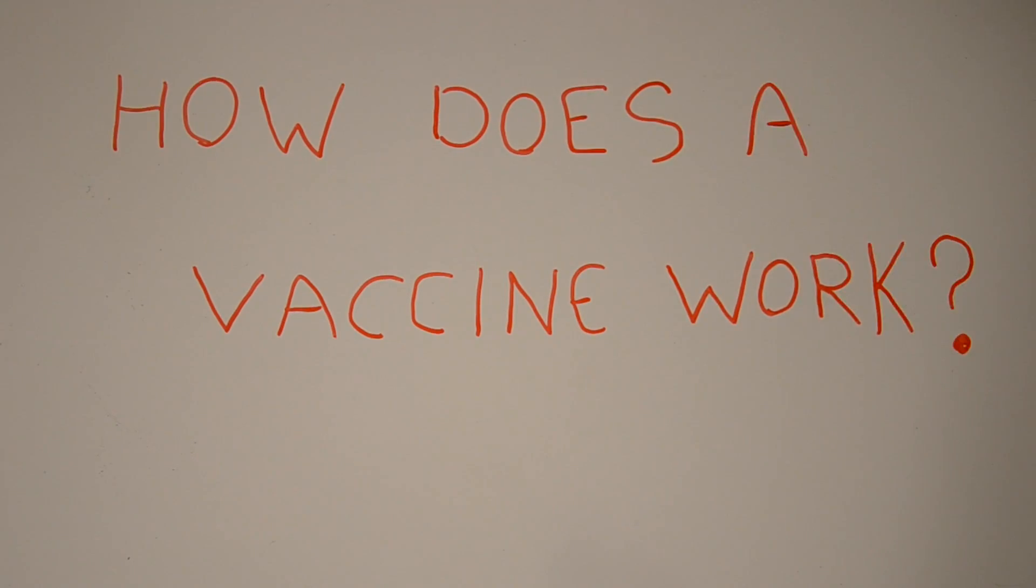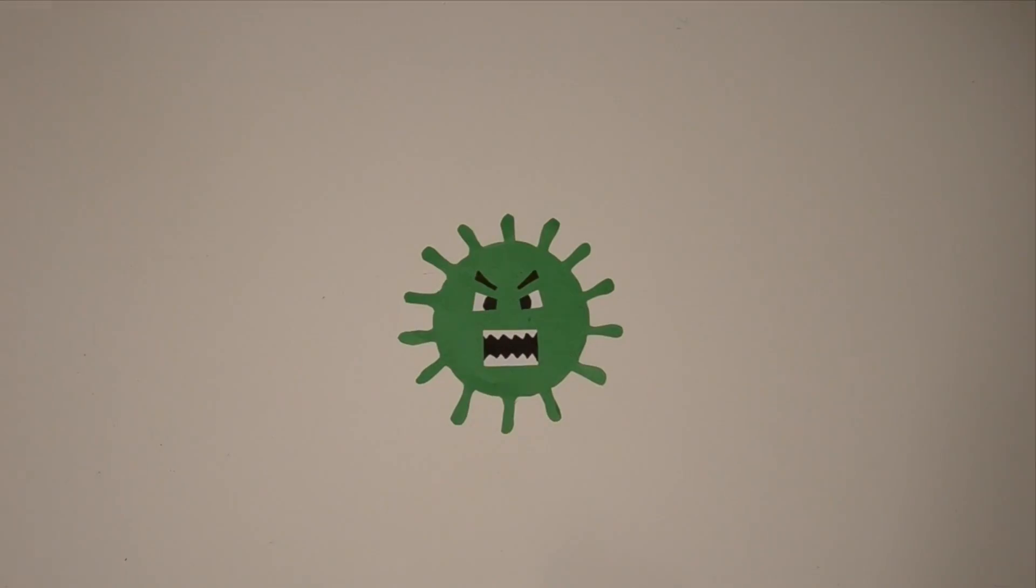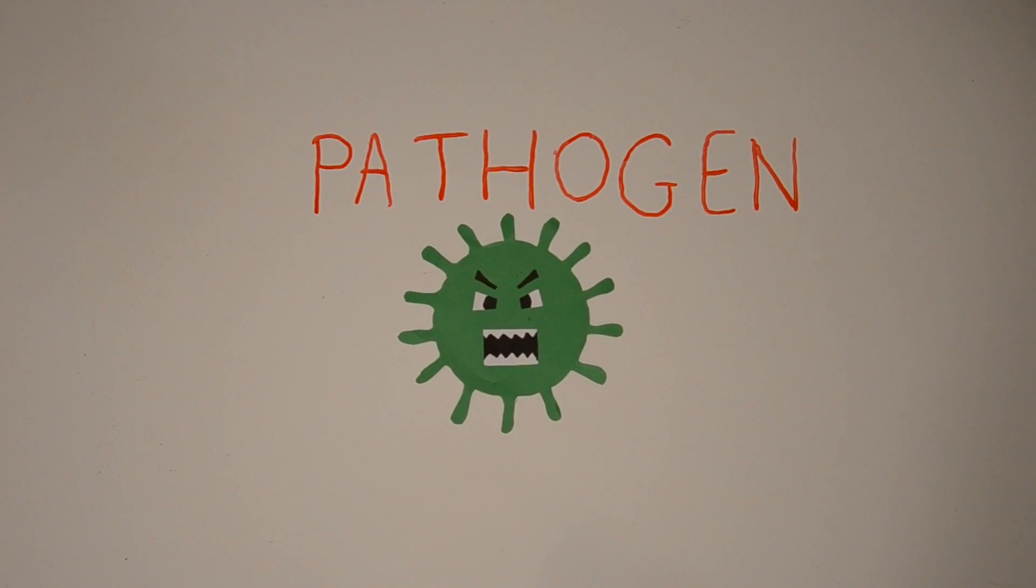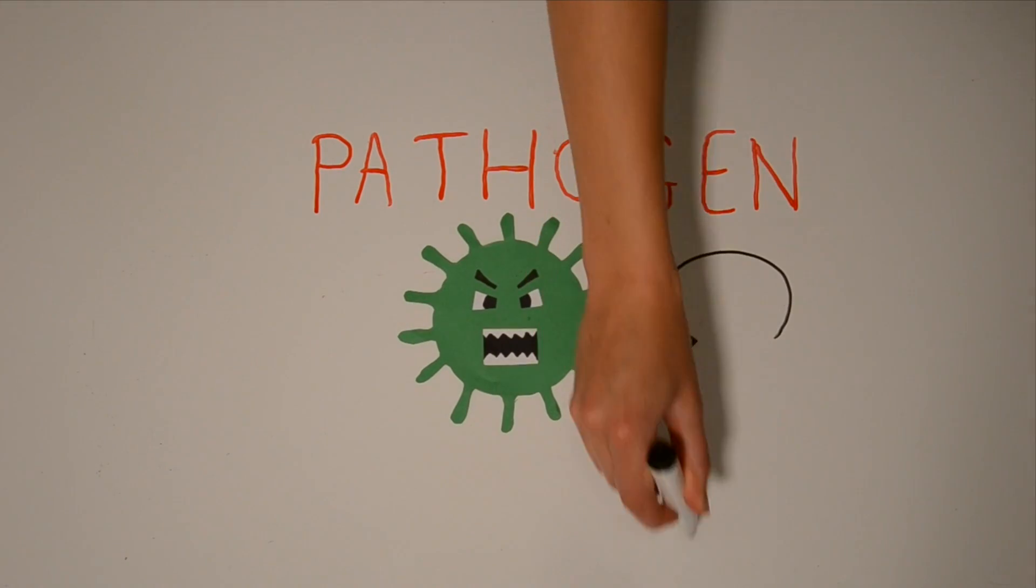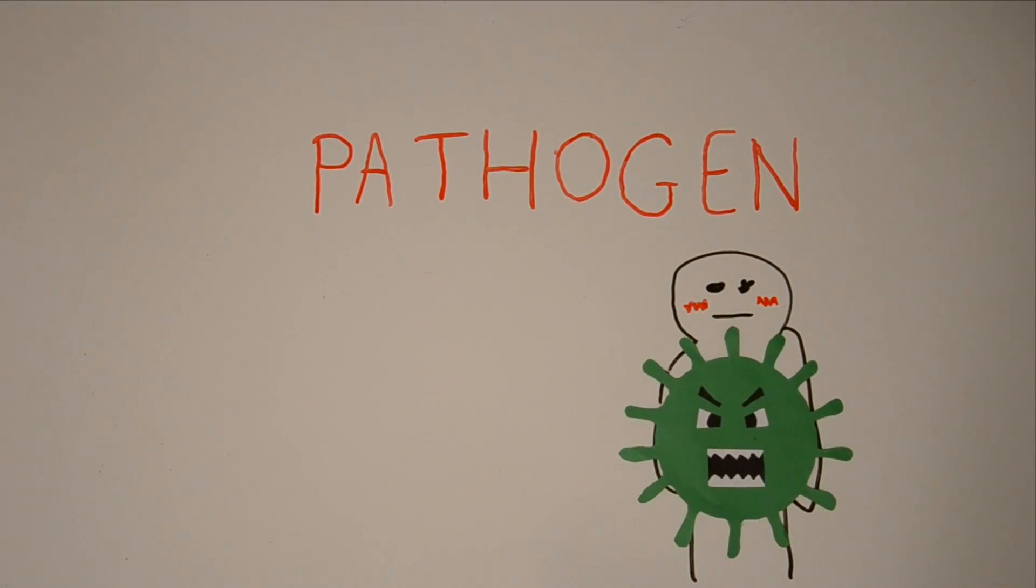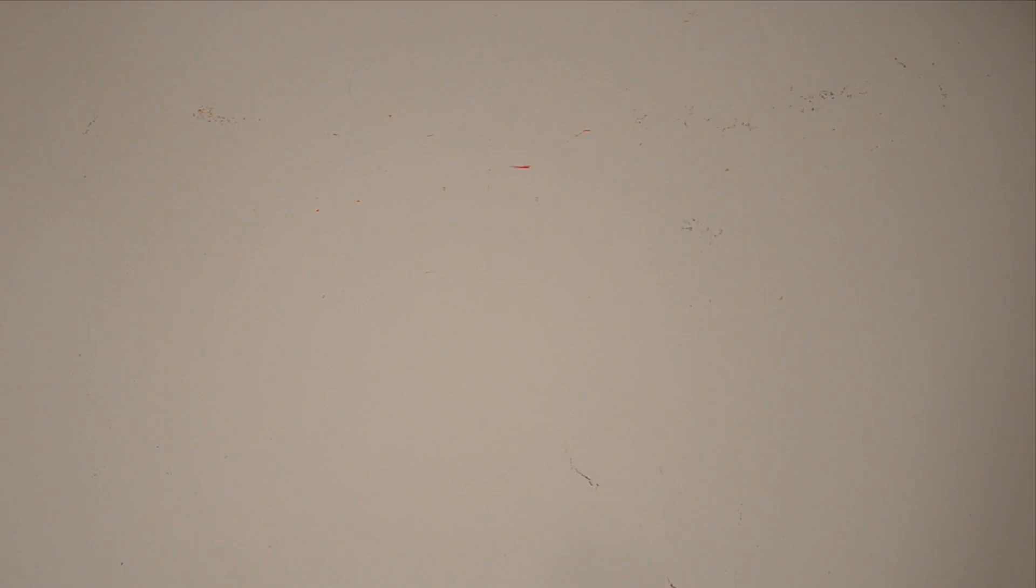To answer this question, we first need to take a look at how our body usually protects us against disease-causing organisms, which are called pathogens. When a pathogen invades your body for the first time, it will not be recognized quickly enough by your immune system and will make you ill.